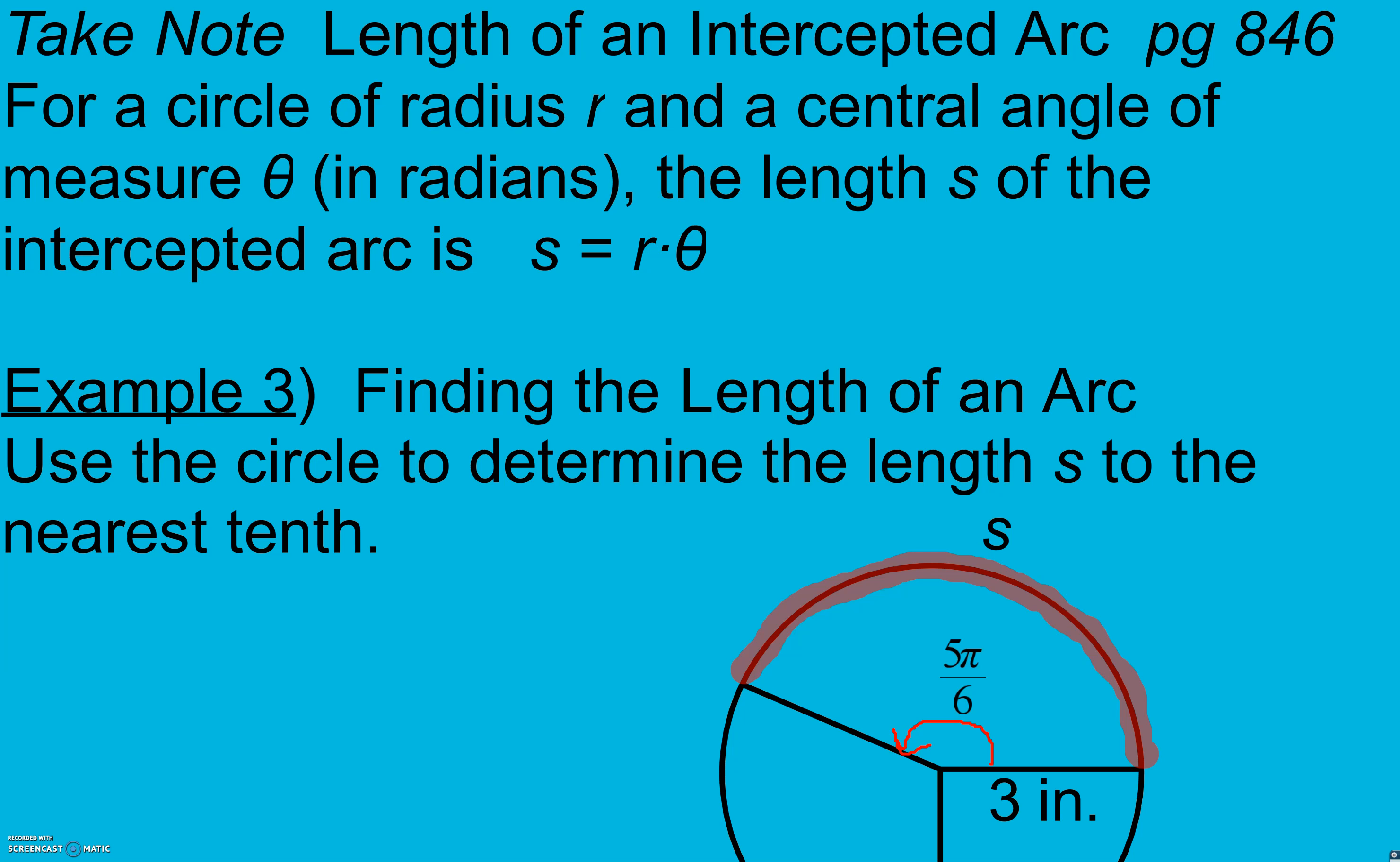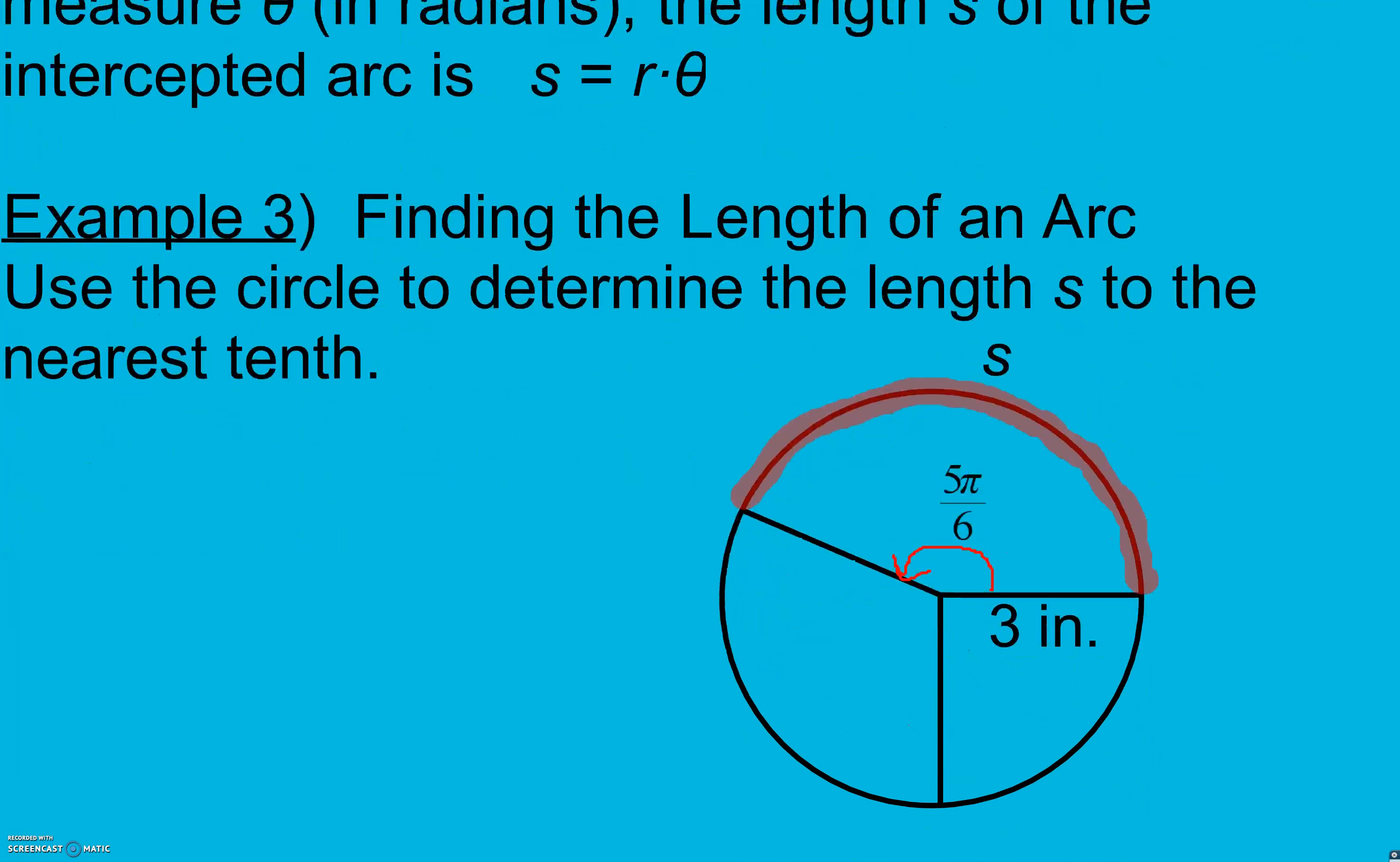So use the circle to determine the length S to the nearest tenth. To find our arc length, we're going to take our radius times our theta measure.